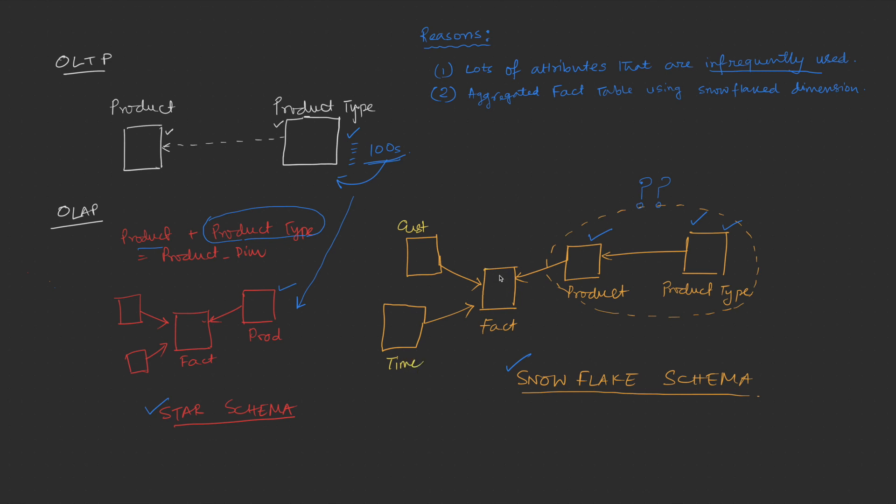Suppose this is a sales fact table. And in this sales fact table, I have a product key which comes from this product table. I have time key which comes from the time table. And I also have customer key. And across all these three keys, I store the sales quantity.